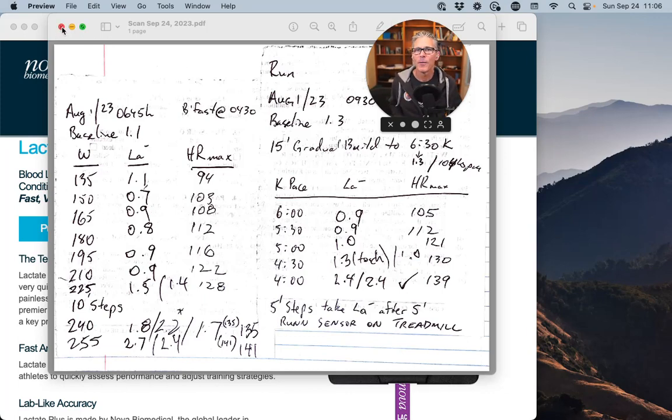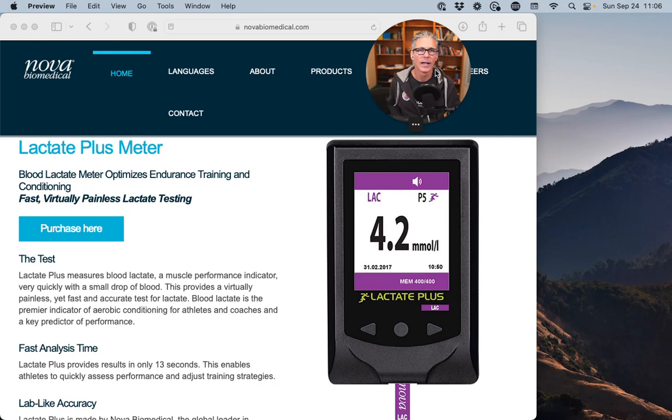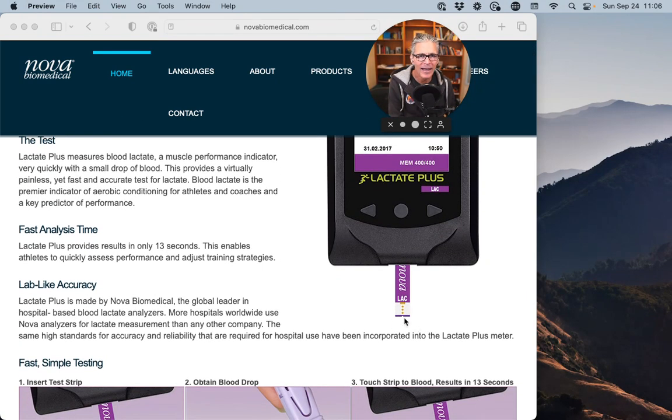So let's wrap up just by telling you what lactate meter I like. I like the lactate plus meter. It's done by Nova Biomedical. You can sample at the tip of the strip. You just spear the surface tension of the drop of blood with the strip. And it'll just soak that blood right up.